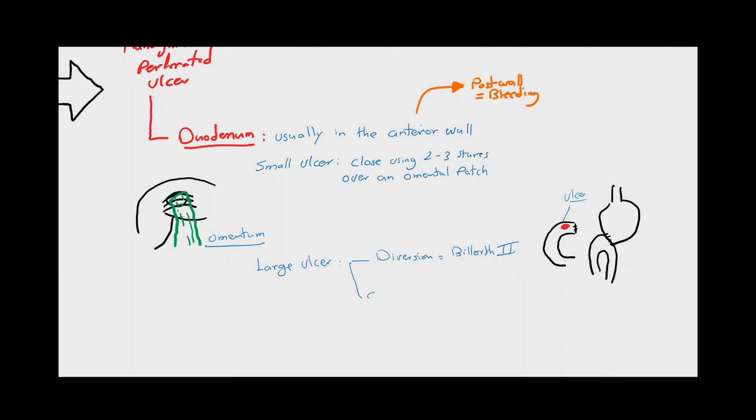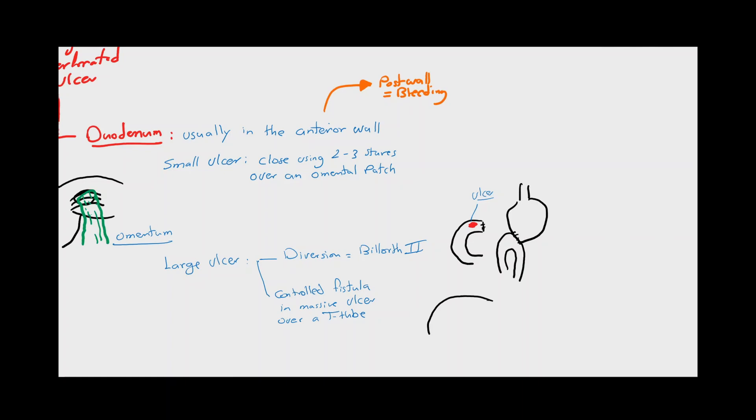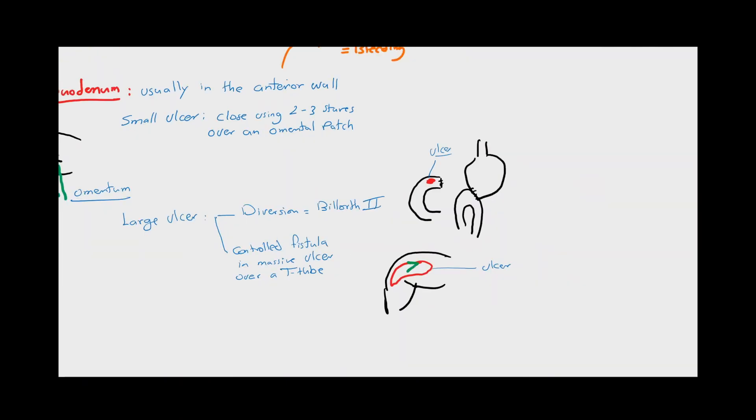The second option is with massive ulceration in which the duodenal wall is beyond any repair attempt. Here the treatment of choice is performing a controlled fistula, in which a T-tube or a Foley catheter is inserted inside the duodenum, and the rest of the duodenal wall is adapted around it with sutures. Definitive surgery should be tried later when the peritonitis subsides.